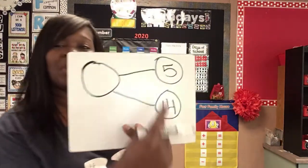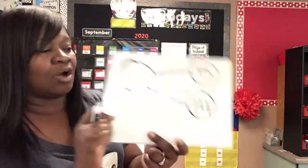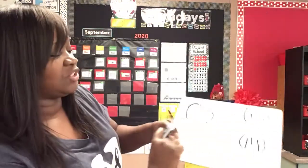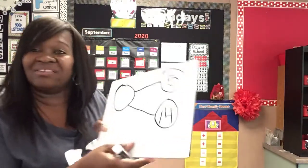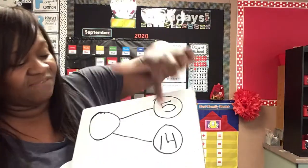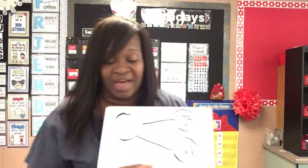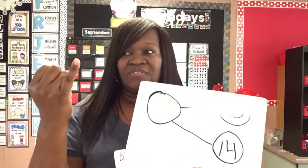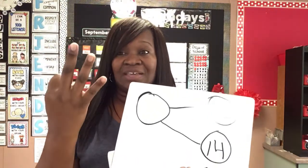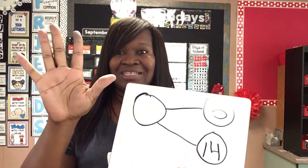So we have the two parts, now it's time to get the whole. What you do to figure this out, you can add. I can say 14, put 14 in my head, and I can count up five. So watch that: 14, 15, 16, 17, 18, 19.